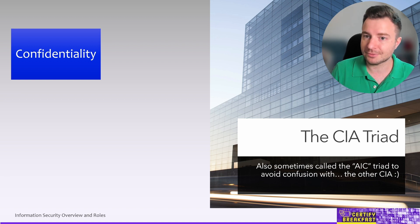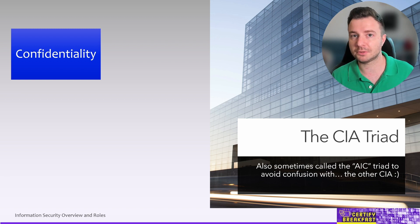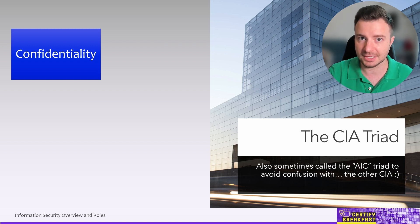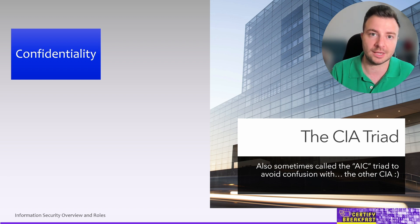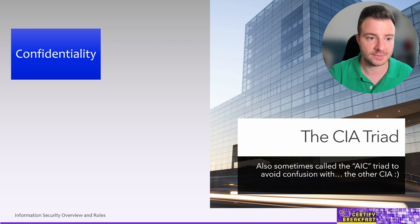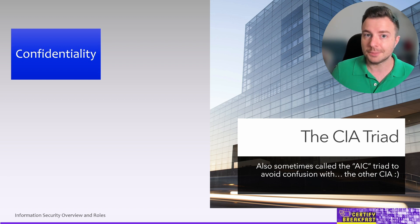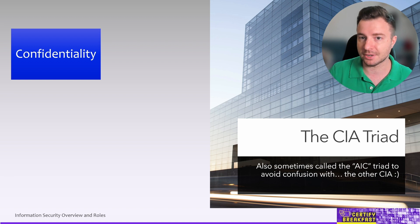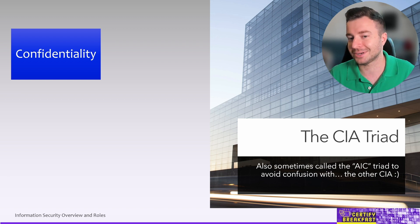That's confidentiality — making sure that only you, or only authorized people, have access to that information and nobody else. This can be implemented in a number of ways. To mention two of them: we have encryption, where we encrypt some information with a specific key, and if we're the only ones who know that key, whoever doesn't have the key has no way of accessing that information. Another way of ensuring confidentiality is by using some sort of access control system — a simple webpage, perhaps, that asks you for your username and password, and perhaps a second factor authentication token. This ensures confidentiality — it's a barrier that stops other people from accessing data in your email that should be considered private.